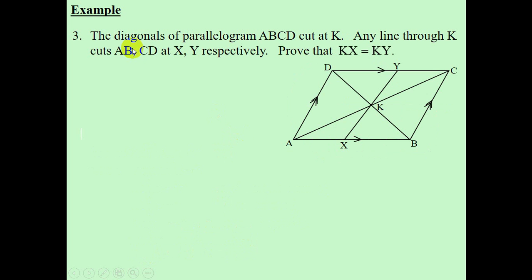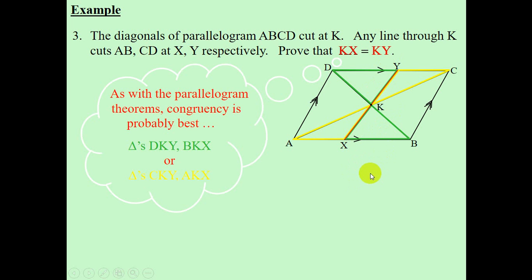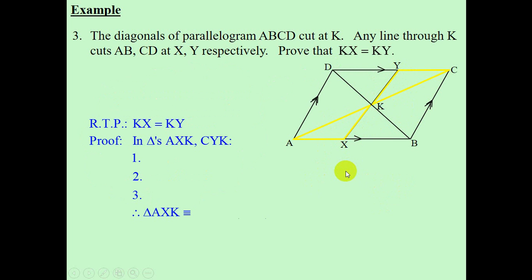Example 3. We want to prove that KX is equal to KY. Looking at KX and KY, they are not angles but lines, so I'm going to try and identify a triangle that they are part of. There is a green triangle and a yellow triangle — KY is part of both. I could either go with the green or the yellow triangles and prove congruency. If the triangles are congruent, then I can conclude that KX will equal KY. I'm going to go with yellow, looking at triangle AXK and triangle CYK.